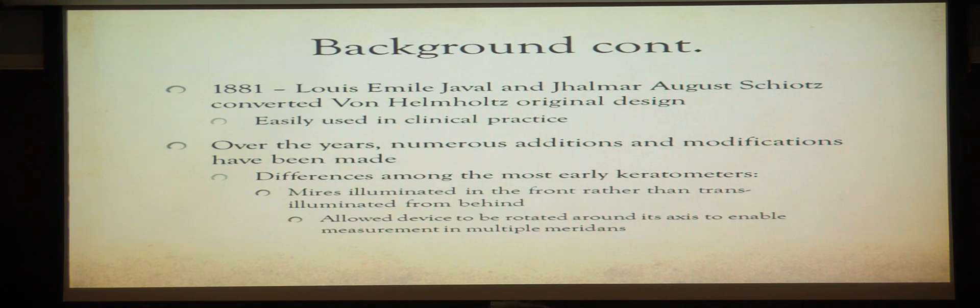In 1881, Louis Emile Javal and August Schiotz took the original Von Helmholtz device, which was primarily used in laboratories, and they modified it so that it can be more easily used in clinical practices. Over the years, a number of modifications and additions were made to the keratometer. Some of the differences between the modified keratometer and the early keratometer is that the mires were illuminated in the front rather than illuminated in the back, and this allowed for the device to be rotated around its axis and enable measurement in multiple meridians.